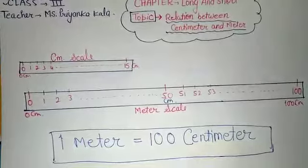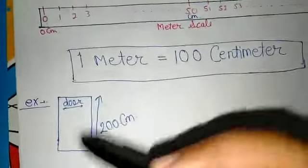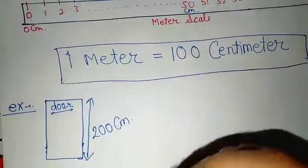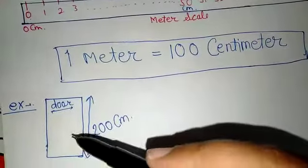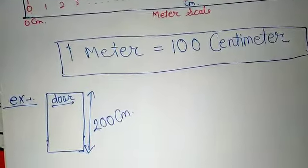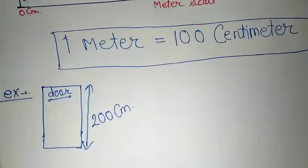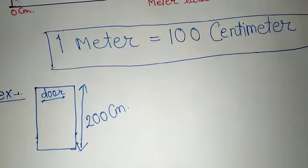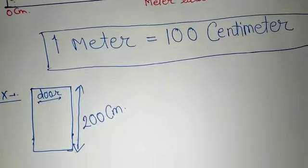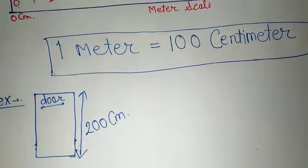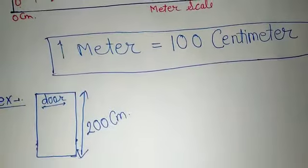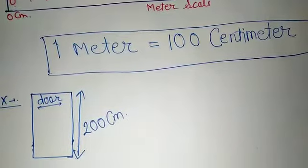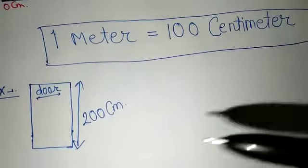Let's explain this in a better way. Suppose I have told you that you have a door. Now, what scale will you use to measure the door — a centimeter scale or a meter scale? We will use a meter scale. Why? Because the length of a door is wide, and using a centimeter scale again and again would be very difficult. It is better to take a longer scale — a meter scale.